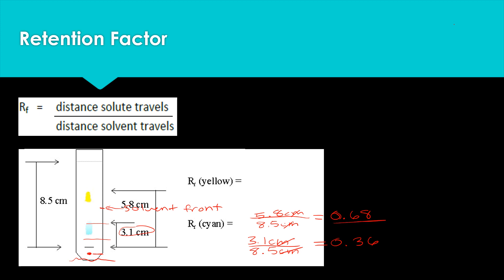The chemical with the larger retention factor is more soluble in our solvent, and the one that travels less distance is less soluble in the solvent. Depending on what our solvent was, we can determine some properties of our chemicals — like their polarity or what kind of intermolecular forces they might have.